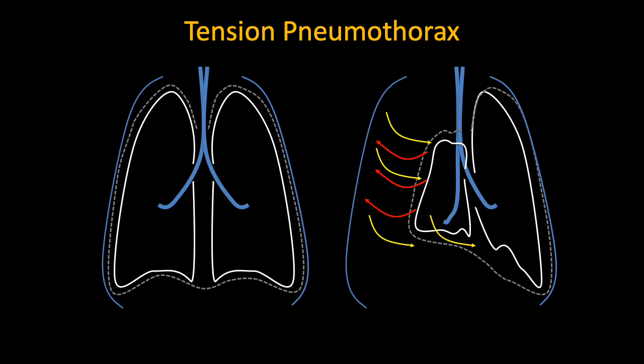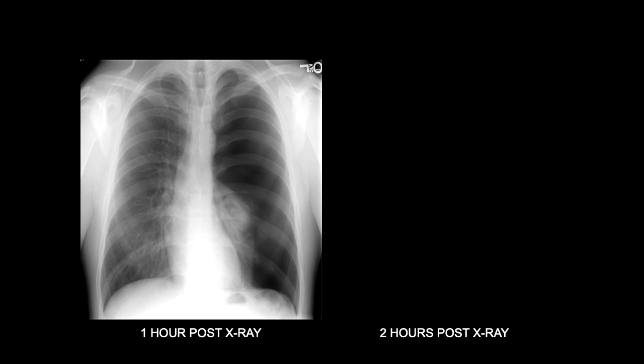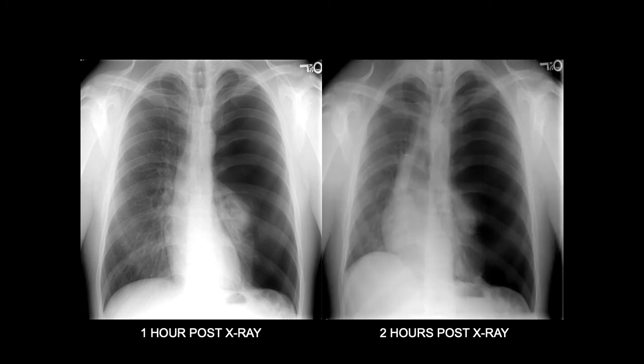A tension pneumothorax is where air is coming in and out and starts to compress the entire parenchyma. The lung collapses very quickly, creating tension by pushing the mediastinum to the other side — this is very dangerous. A typical example: a patient who presented to the emergency department had a left lung total collapse on chest x-ray, and two hours later developed tachycardia with the mediastinum completely shifted to the right side of the chest cavity, confirming tension pneumothorax.